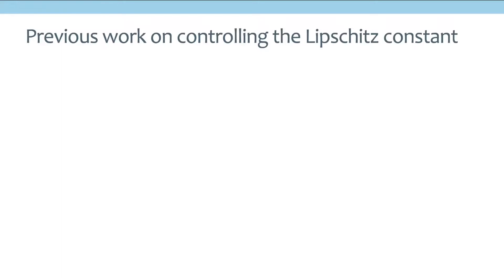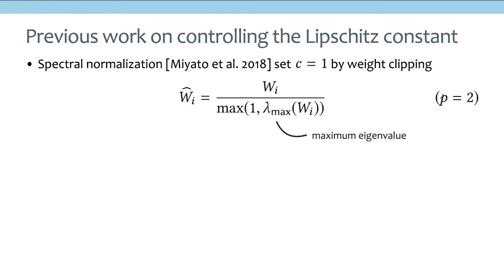This Lipschitz constant is super interesting. And actually, there are a lot of previous work looking into this Lipschitz constant in neural networks. But most of them are focusing on controlling the Lipschitz constant. For example, a very popular method called spectral normalization, they basically want the Lipschitz constant to be 1, and they achieve this by clipping the weights.